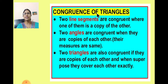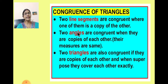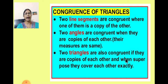Now, congruence of triangles. In the previous session, we have learnt two line segments are congruent where one of them is a copy of the other. And then we have learnt two angles are congruent when they are copies of each other — that means their measures are same. Similarly, two triangles are also congruent if they are copies of each other, and when superposed, they cover each other exactly.